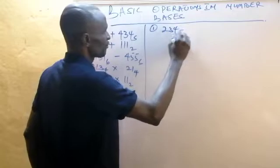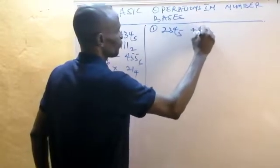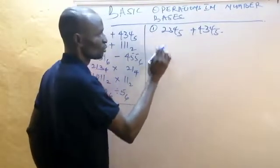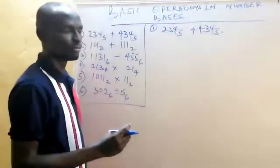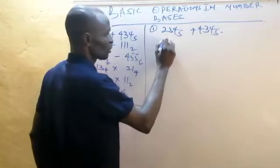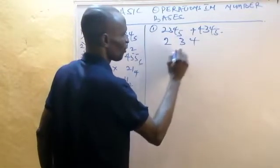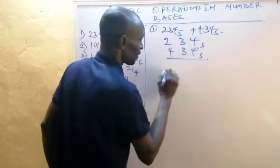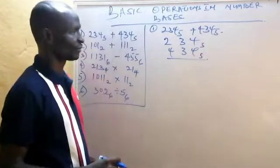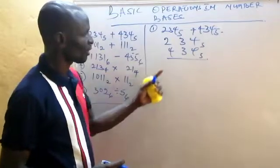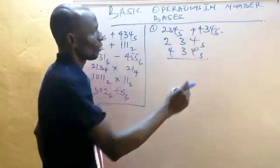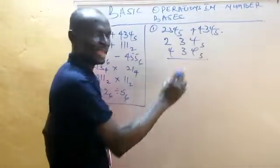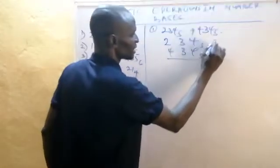Question one: 234 base five plus 434 base five. Just the same way we operate in base 10, that's the same way we're going to approach this. We're adding in base five. So four plus four becomes eight — but that eight is actually in base 10.